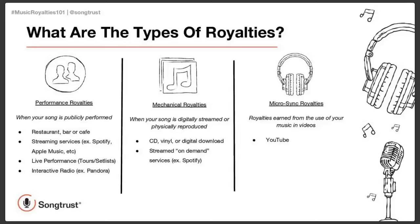Lastly, we have micro-sync royalties, where 'sync' stands for synchronization — micro-synchronization royalties involve synchronization with media, usually video. YouTube is the primary source of micro-sync royalties for songwriters. Since both the composition and the recording are being used in a single stream, there are two different types of revenue being earned. A publisher would normally be paid the mechanical royalties, but if a songwriter doesn't have a publisher, the mechanical royalties are still owed to the original owner of the composition, and we're working to deliver those royalties to songwriters.